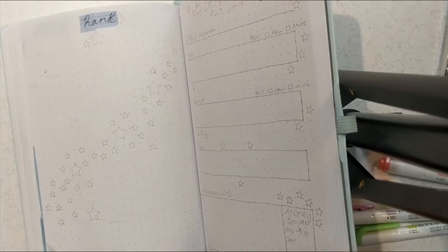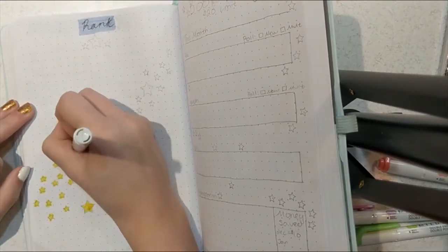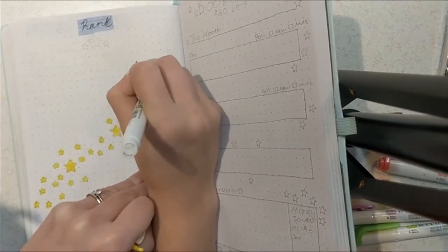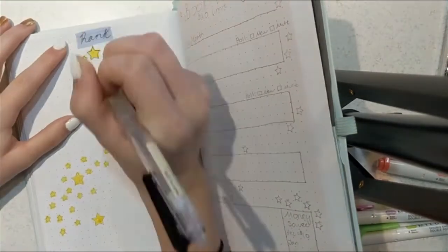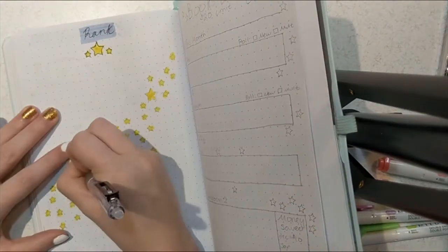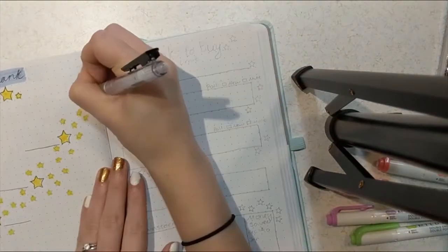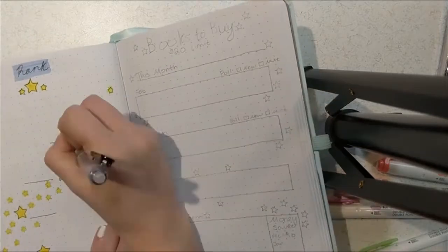My next spread is the rankings spread and I enjoy doing this at the end of the month. I like how this turned out. I thought it was really fun to have the different size stars and have the big ones be right next to where I'm going to write my top three favorites and my least favorite there at the bottom. But it was quite tedious to outline all of these yellow stars with the black marker.